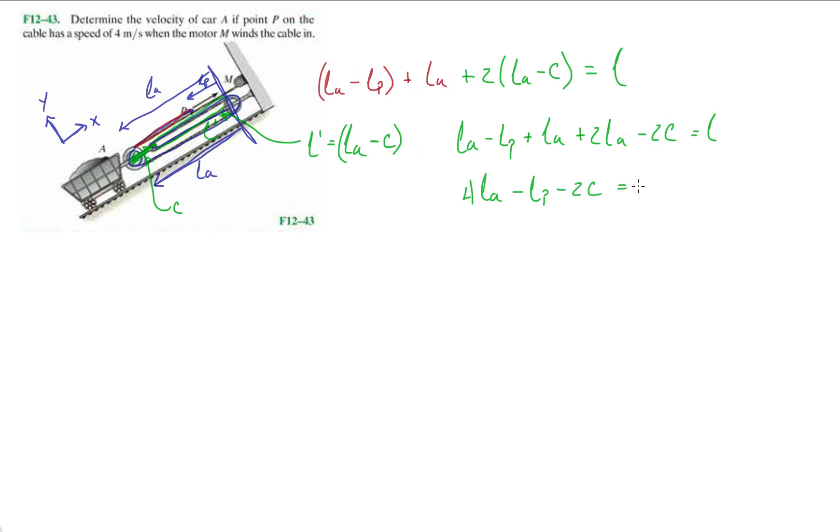It's a bit messy, so draw them out, draw the figures out huge in your paper. When we take one time derivative, we're going to get 4VA minus VP.